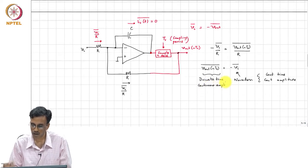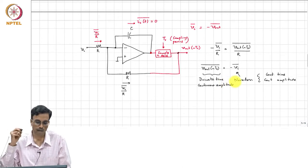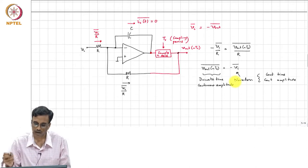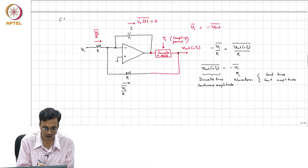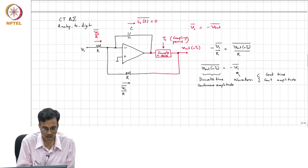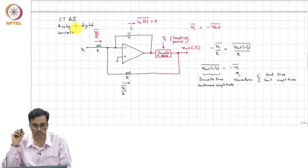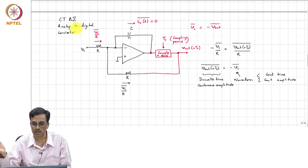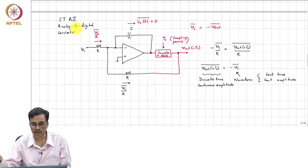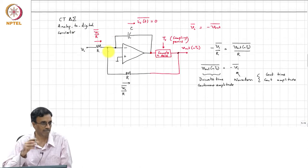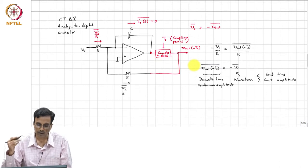And remember, this is called a continuous-time delta-sigma analog-to-digital converter. Analog-to-digital conversion converts something which is continuous in time and amplitude to something which is discrete in time and amplitude. With this, we have come halfway there. We have discretized time, but amplitude is still continuous. So the next logical progression is to put a quantizer here.